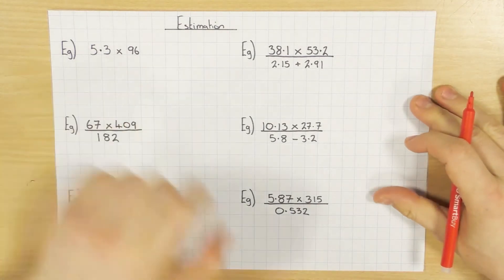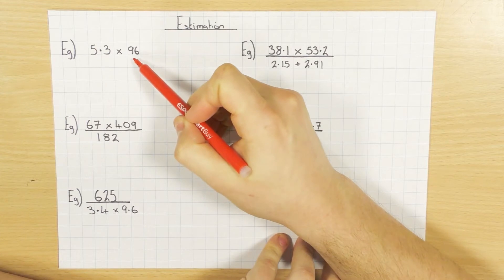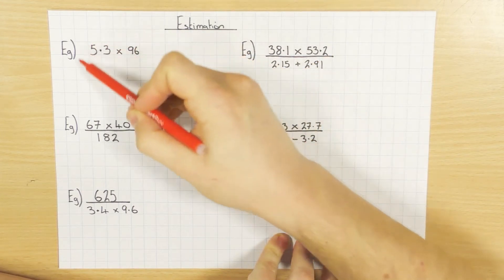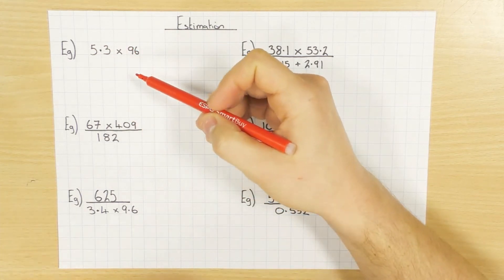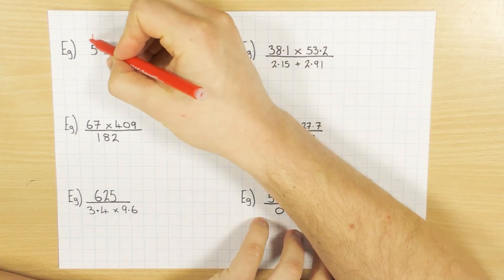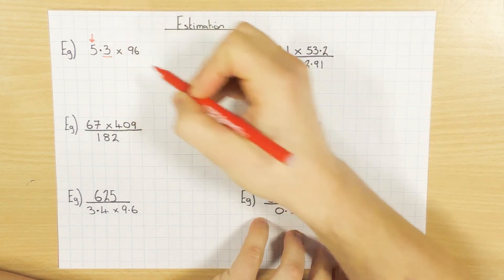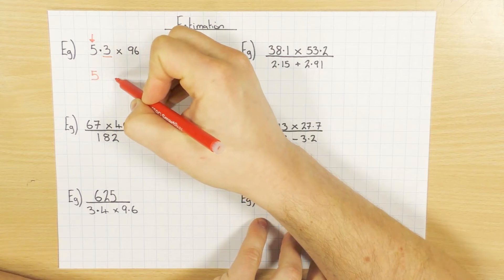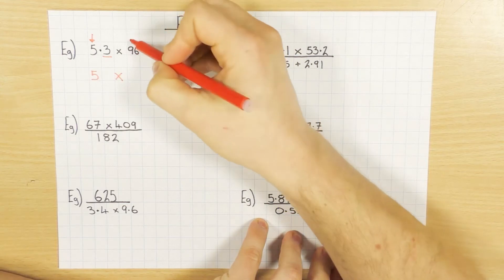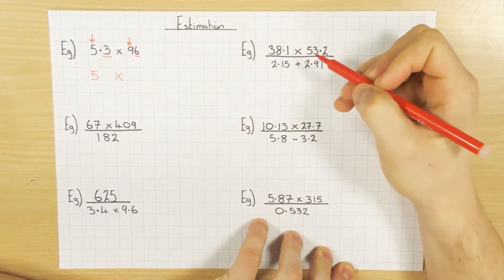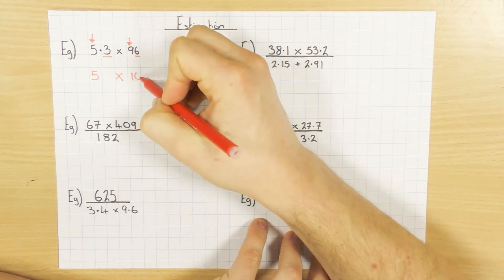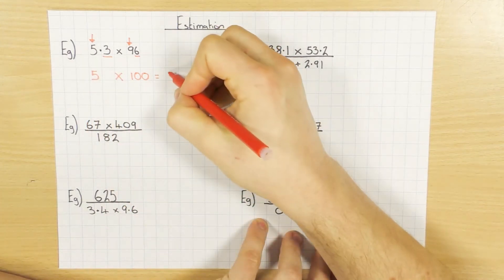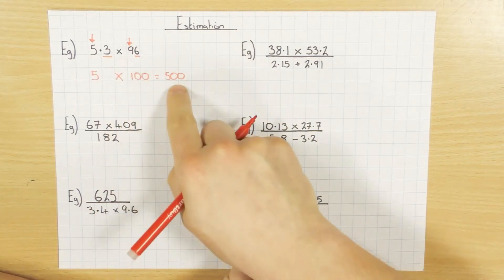Let's have a crack at a few examples. Here's the first one: 5.3 times 9.6. Estimating is when we have an educated guess, so we're going to round these numbers to make the calculation easier. The first significant figure of 5.3 is the 5. The next number is 3, which tells me to round down, so 5.3 stays as 5. For 9.6, the 9 is the first significant figure. The 6 tells me to round up, so the 9 becomes 10. 5 times 10 is 500, so the estimate is 500.